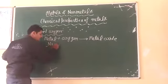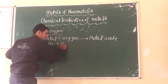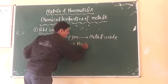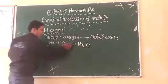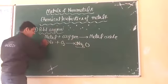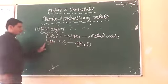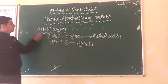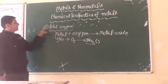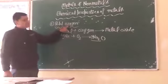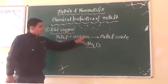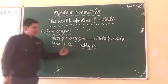Sodium metal reacts with oxygen to form sodium oxide. Now balance it: 4Na + O₂ → 2Na₂O. Please write — reaction with oxygen: metal reacts with oxygen to form metal oxide.